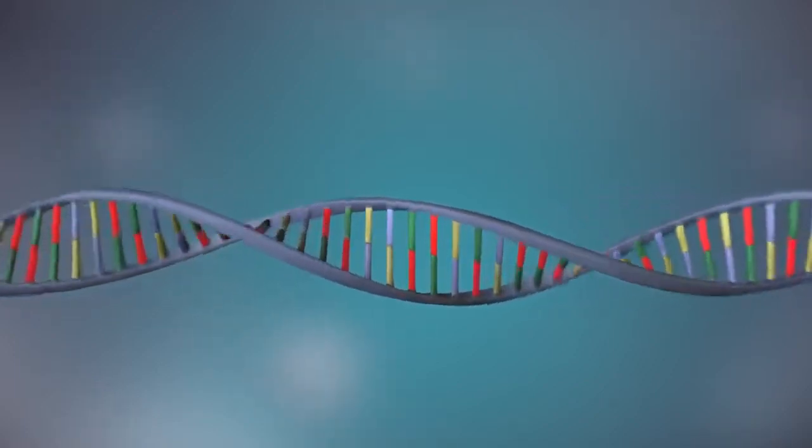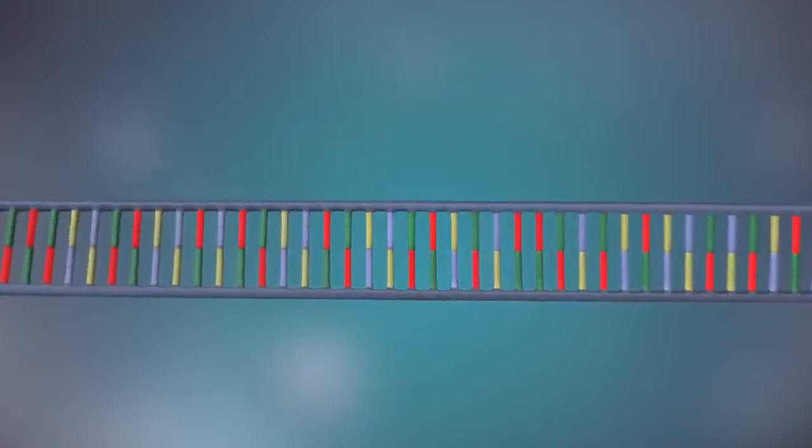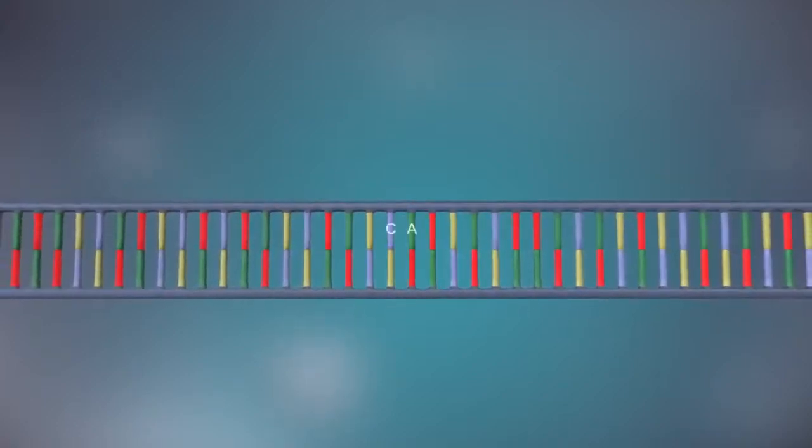Each strand is made up of a sequence of four chemical bases, represented by the letters A, C, G and T.